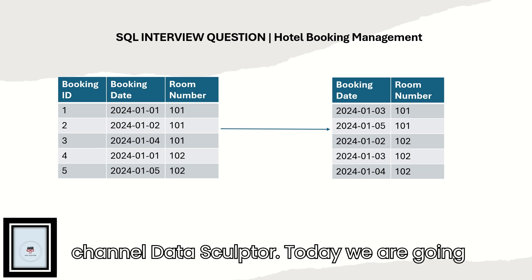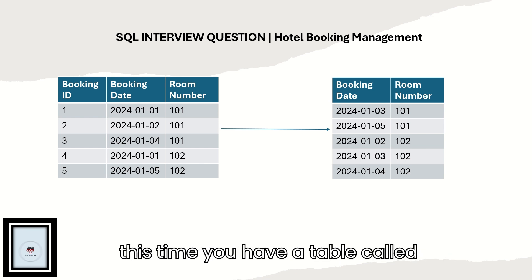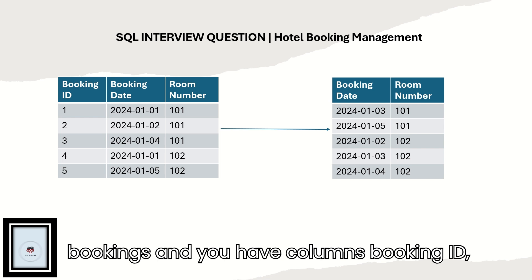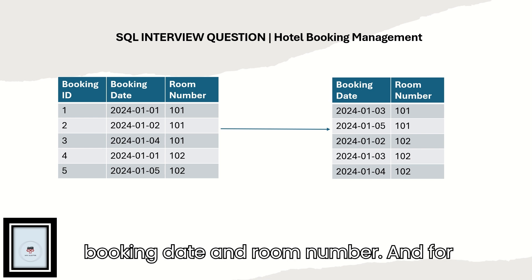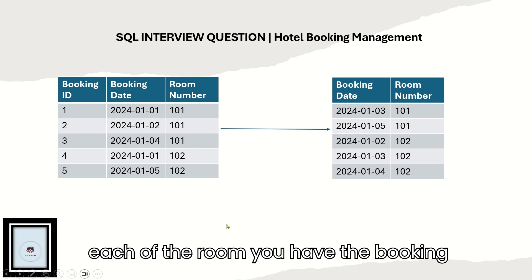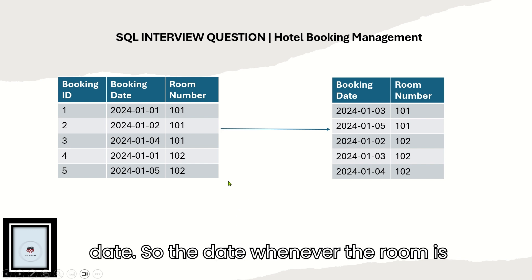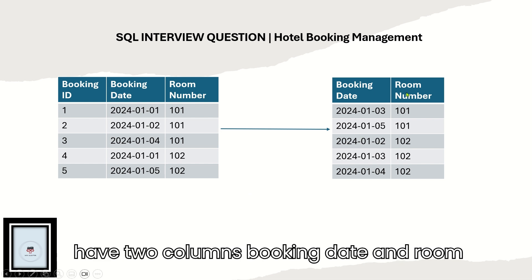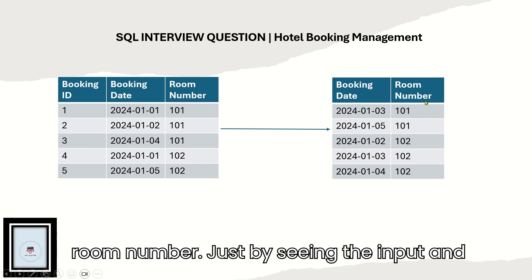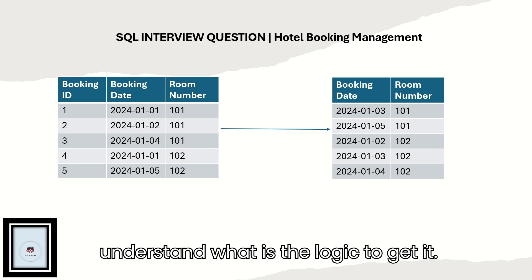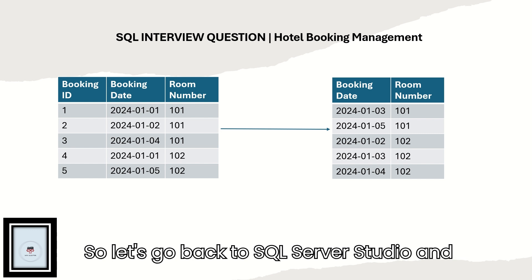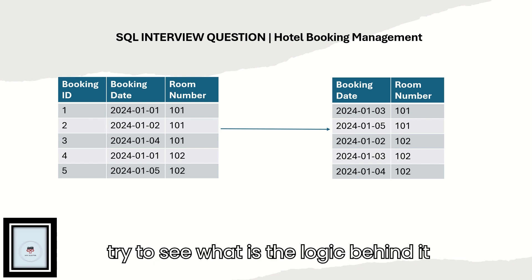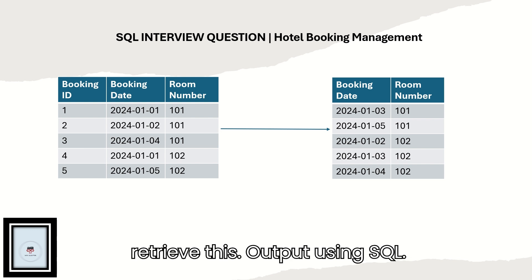Greetings everyone, welcome back to my channel Data Sculptor. Today we are going to see another interesting question. You have a table called 'bookings' with columns booking_id, booking_date, and room_number — for each room you have the booking date, the date when the room is booked. Looking at the input and output, we need to understand the logic to get it, so let's go back to SQL Server Studio.